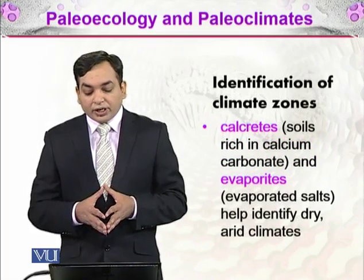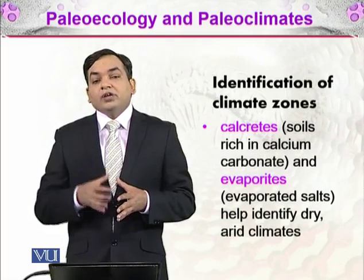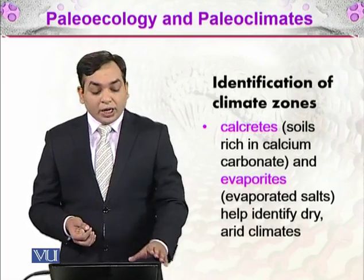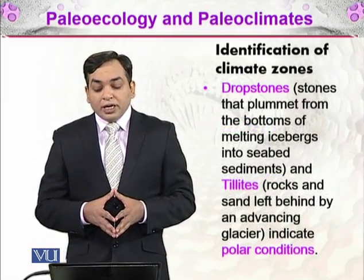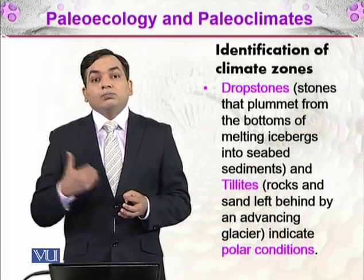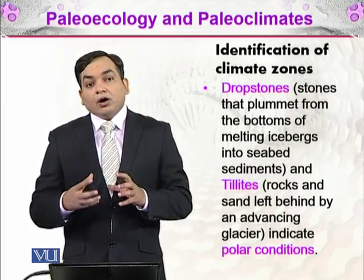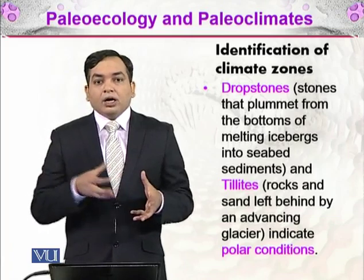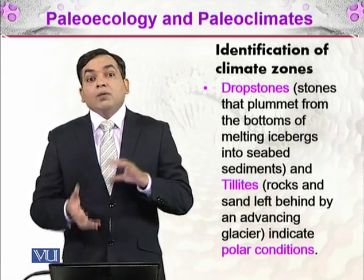For dry and arid climates, evaporite minerals are much more prevalent and can be identified in the rock record. The same is the case for drop stones and tillites. Drop stones are stones that plummet from the bottoms of melting icebergs into seabed sediments. Tillites are rocks and material left behind by advancing glaciers. These features indicate polar conditions — if you find such things, that area was once near the poles.